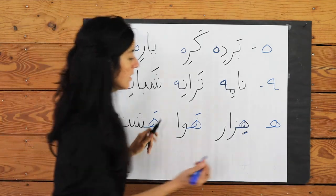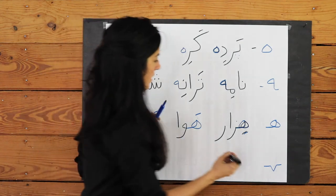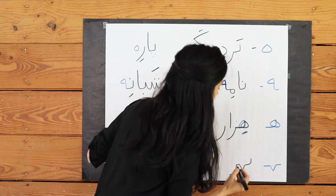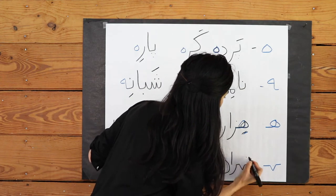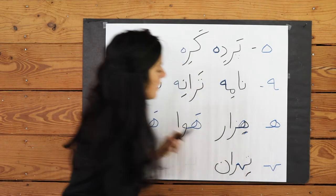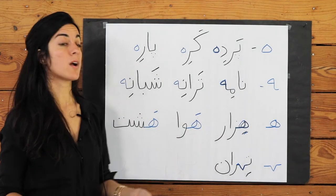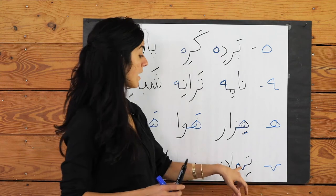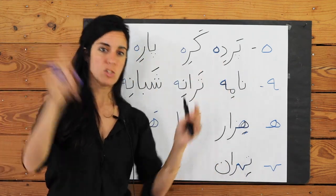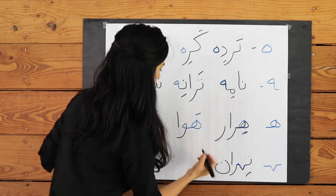And finally, when H comes in the middle of a word it looks like this — a little lower tick shape — and we use it to write Tehran, the capital of Iran. That's what it looks like when squished between two different letters where it connects.